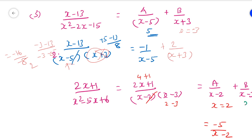Next substitute x equals 3, discarding the (x minus 3) factor: 2 times 3 plus 1 equals 7, divided by (3 minus 2) equals 1. So 7 divided by 1 equals 7. Therefore B equals 7/(x minus 3). That is the simplest way to find the partial fraction expansion. Thank you.